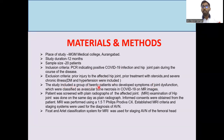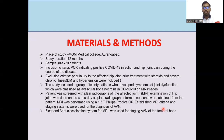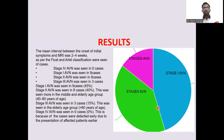The study included 20 patients with symptoms of joint dysfunction classified as avascular necrosis in COVID-19 on MR images. Each patient was screened with plain radiograph of the affected joint; MRI examination was done on the same day. MRI was performed using a 1.5 Tesla Philips scanner. Established MRI criteria and the Ficat and Arlet classification system were used for staging AVN of the femoral head.